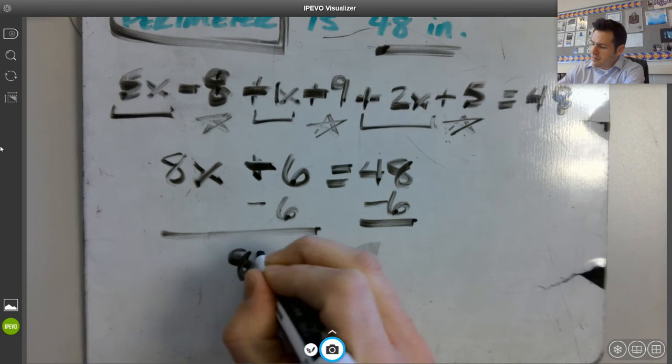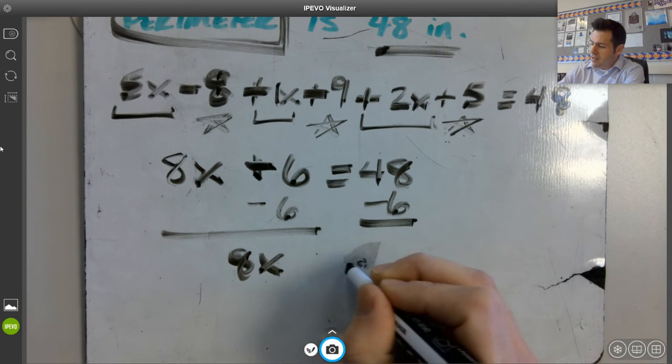8x, 6 minus 6 is 0, so it leaves us with that 8x. 48 minus 6 is 42.